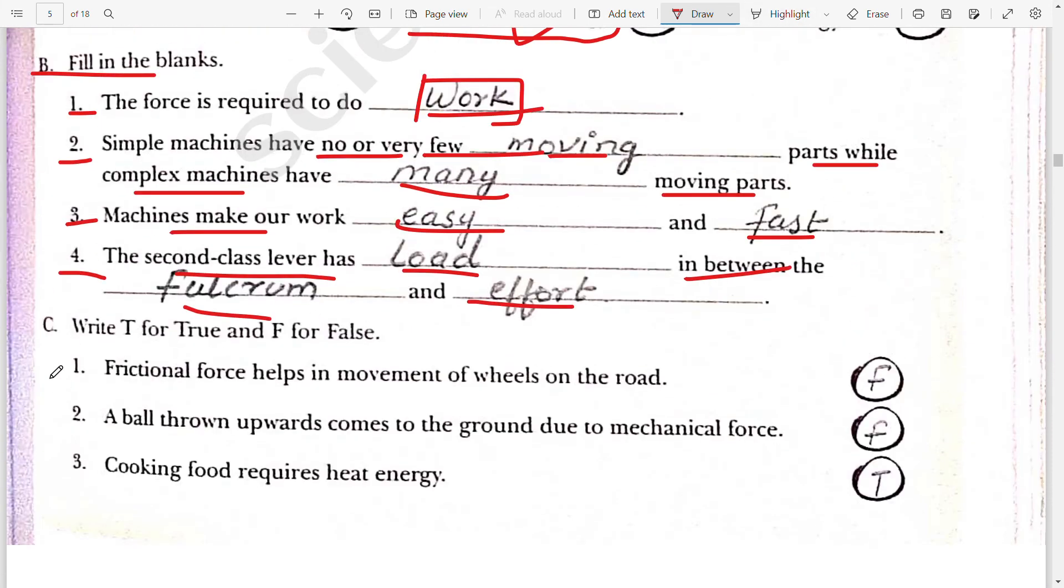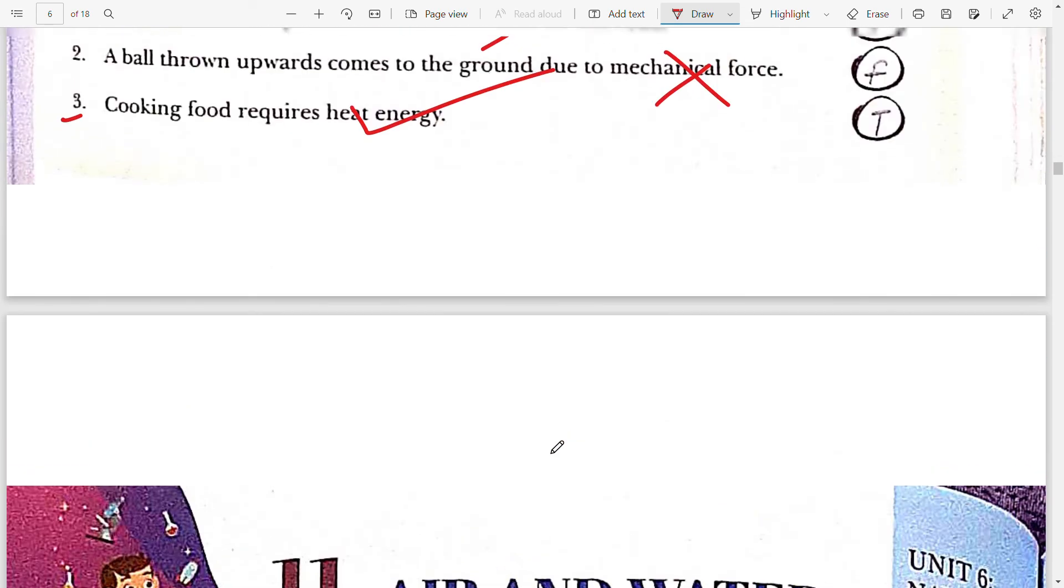Fourth, second class lever has load in between the fulcrum and effort. Now we move to true and false. T for true and F for false. Frictional force help in the movement of wheel on the road. False. A ball thrown upward comes to the ground due to mechanical force. No, that is gravitational force. Third, cooking food requires heat energy. Yes, it is very true.